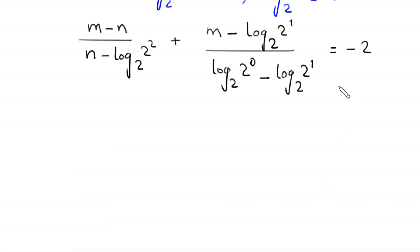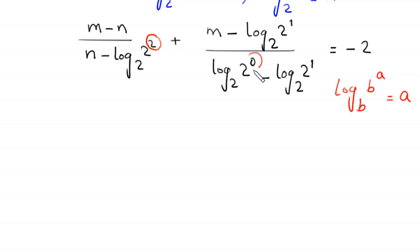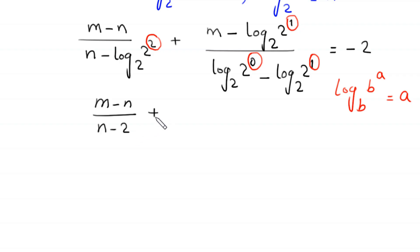By using the property log base p of d to the power a equals a, log base 2 of 2 squared becomes 2, log base 2 of 2 to the power 0 becomes 0, and log base 2 of 2 to the power 1 becomes 1. So the equation becomes m minus n divided by n minus 2, plus m minus 1 divided by 0 minus 1, equal to negative 2.